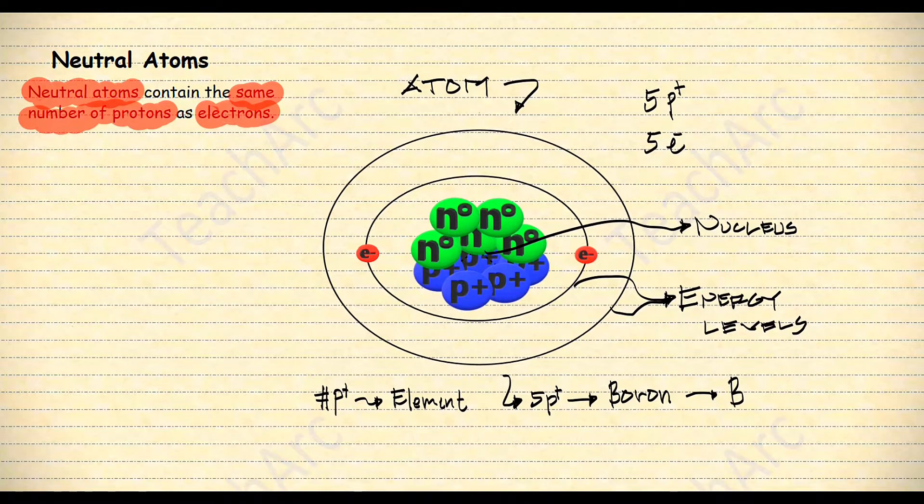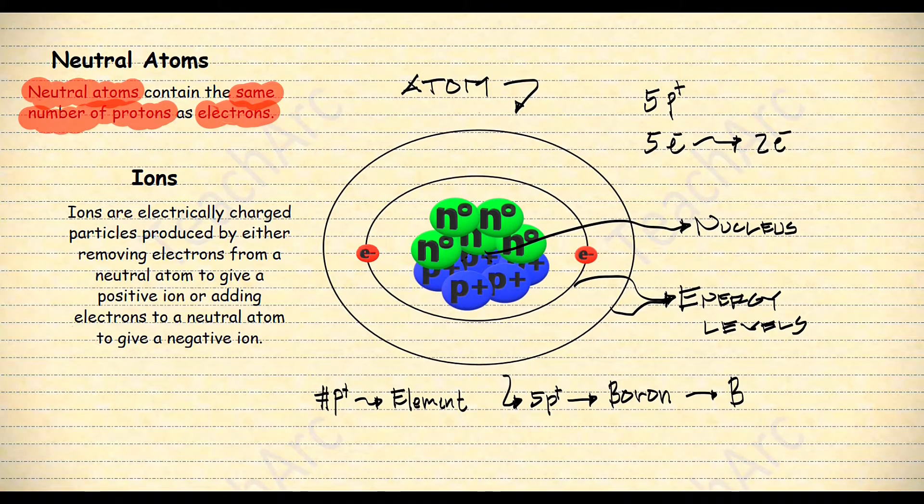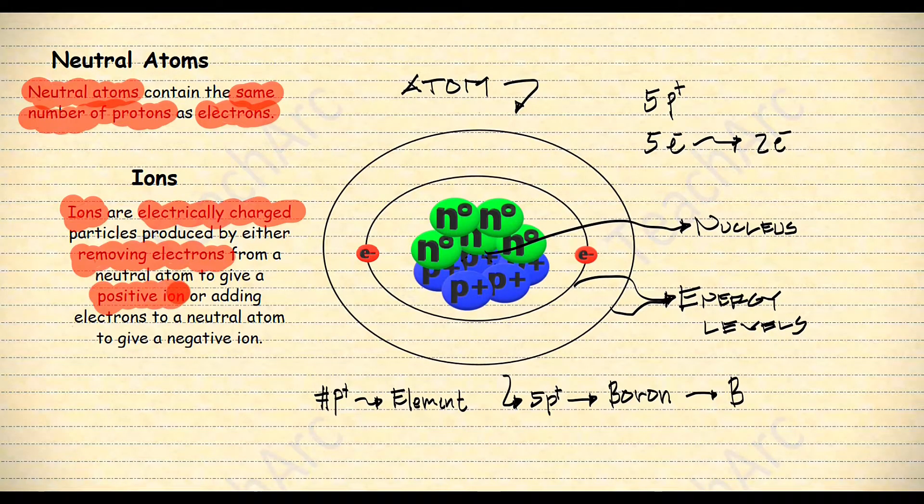Now what if three electrons were removed from the atom, meaning we are left with two electrons? In that case, this neutral atom becomes an ion. Ions are electrically charged particles produced by either removing electrons from a neutral atom to give a positive ion, or adding electrons to a neutral atom to give a negative ion.